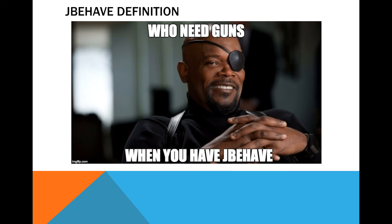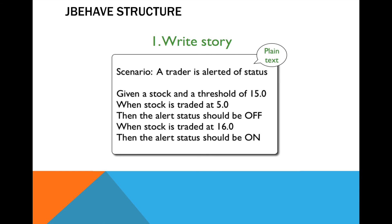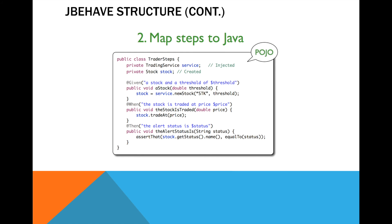To understand JBehave more clearly, let's start defining the keywords. You will become very familiar with these since you'll use them a lot. First is Story — a story is a collection of scenarios, each detailing a different example of the behavior of a given increment of functionality in the system. The scenario is written in plain text, with no special programming syntax.